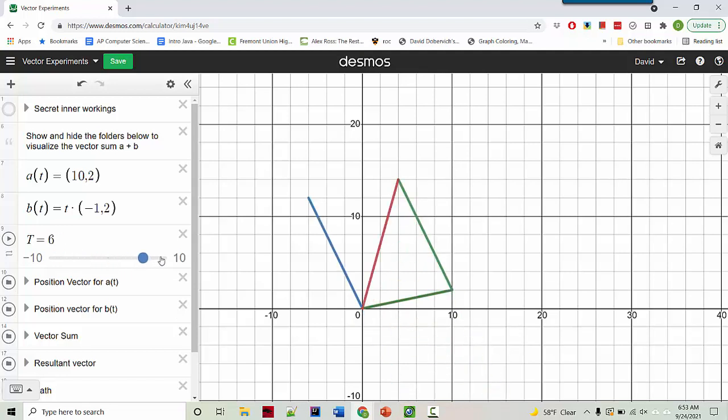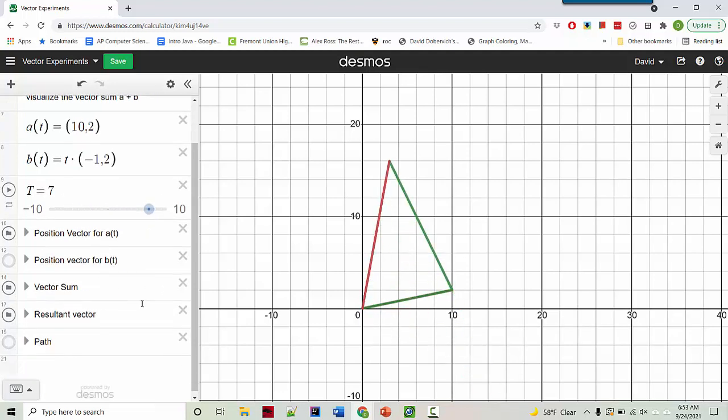So you can see, and if you want to hide things to make it less cluttered, so I'm actually going to hide the b vector by itself. So now you only see b happening at the end of a. And then if you want to visualize the entire path this traces out, you can click path, and so you can see that the red resultant vector is pointing to every spot along the black path here.